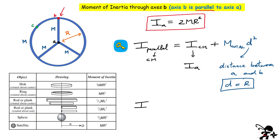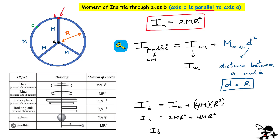The moment of inertia through axis B equals the moment of inertia through axis A, plus the correction term. The total mass of the object is 4m, and d equals r. So we get 2mr² plus 4mr², which gives a moment of inertia through axis B equal to 6mr². We notice that the moment of inertia through any axis parallel to the center of mass is always bigger than I_a.